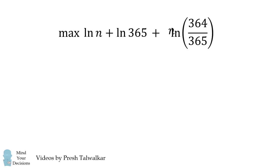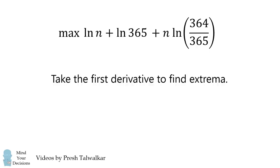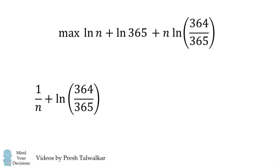We can now take the first derivative to find extrema. The first derivative is equal to 1 over N plus the natural log of 364 over 365. We can solve for where this is equal to 0, and we'll get N star is equal to negative 1 over the natural log of 364 over 365.